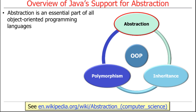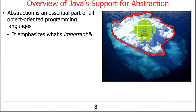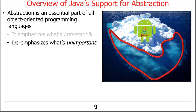Abstraction is essential. Everything in programming languages is about abstraction these days at one level or another, and it's typically either control abstraction or data abstraction. Why is abstraction relevant? It emphasizes what's important and it deemphasizes what's not important — what's implementation detail at a given level of abstraction.